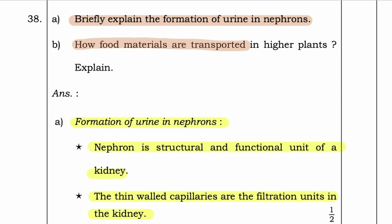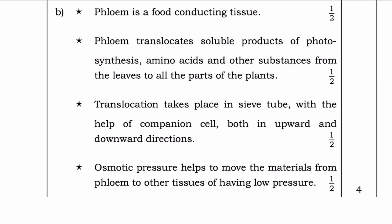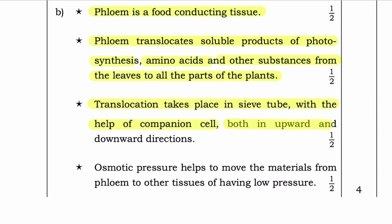Question B: How are food materials transported in higher plants? Answer: Food materials are transported in higher plants by phloem. Phloem is a food-conducting tissue. Phloem translocates soluble products of photosynthesis, amino acids and other substances from the leaves to all parts of the plant. Translocation takes place in sieve tubes with the help of companion cells, both in upward and downward directions. Osmotic pressure helps to move the materials from phloem to other tissues having lower pressure.